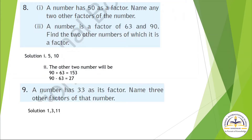Question No. 8: A number has 50 as a factor. Name any 2 other factors of the number — they are 5 and 10. Question No. 2: A number is a factor of 63 and 90. Find the other 2 numbers — add the 2 numbers and subtract them, and you will get 2 factors. Question No. 9: A number has 33 as a factor. Name 3 other factors — you can write 3, 11, or 1.